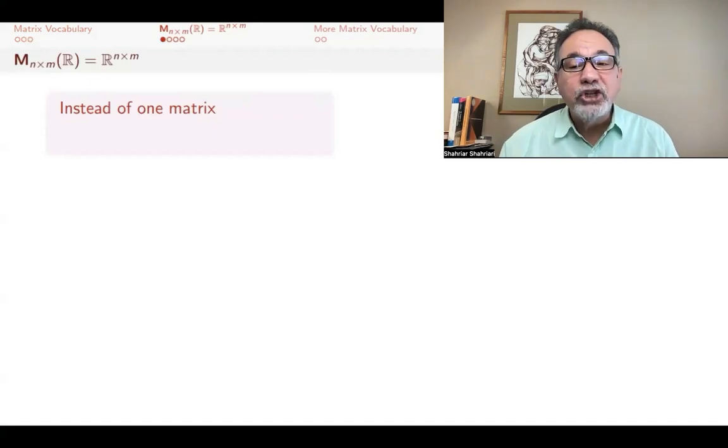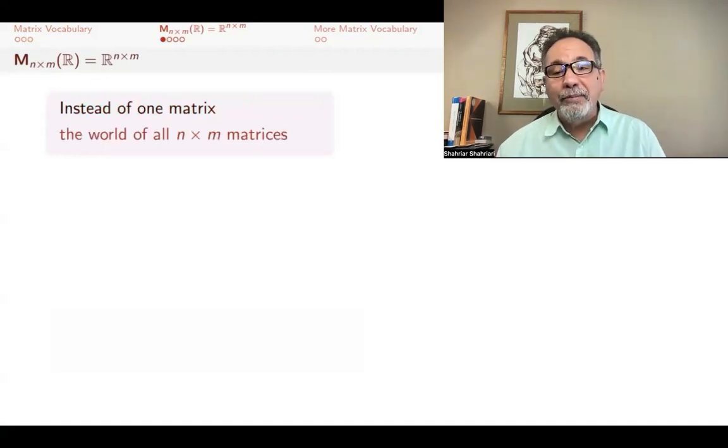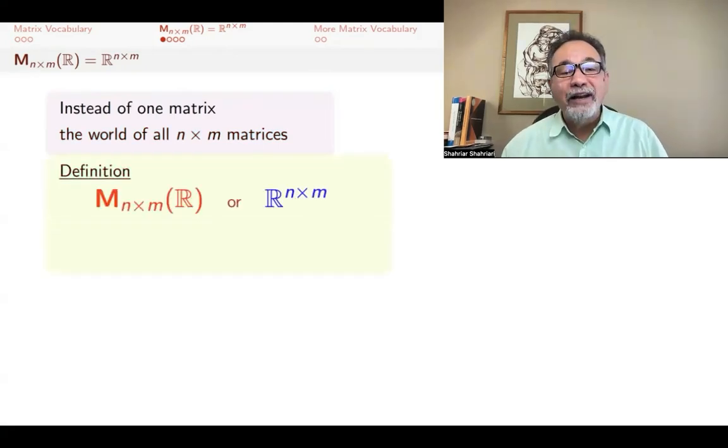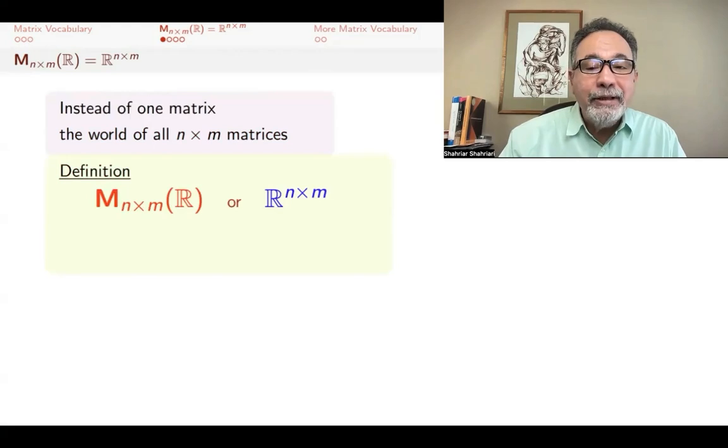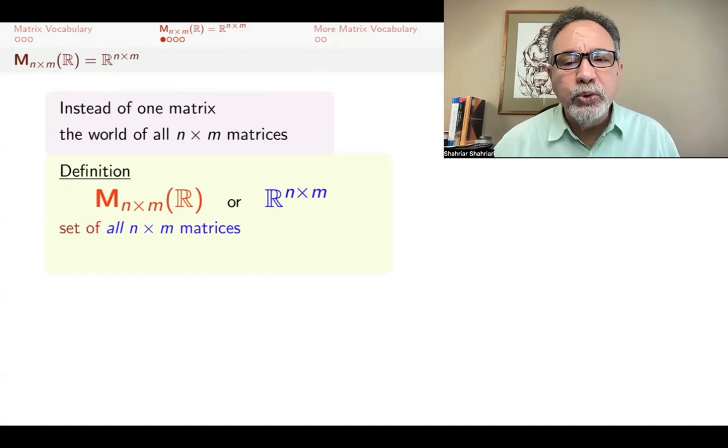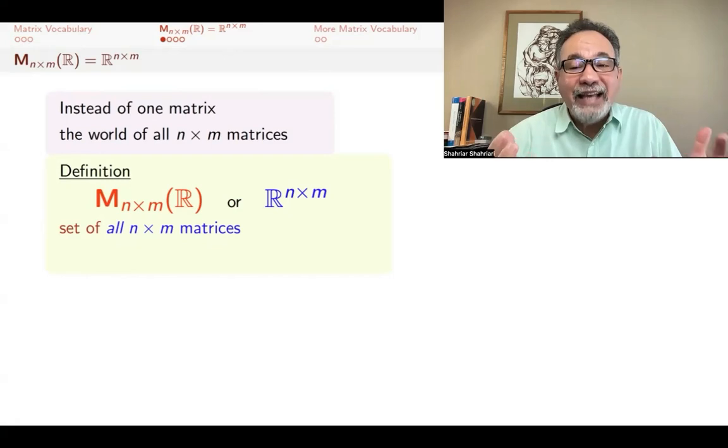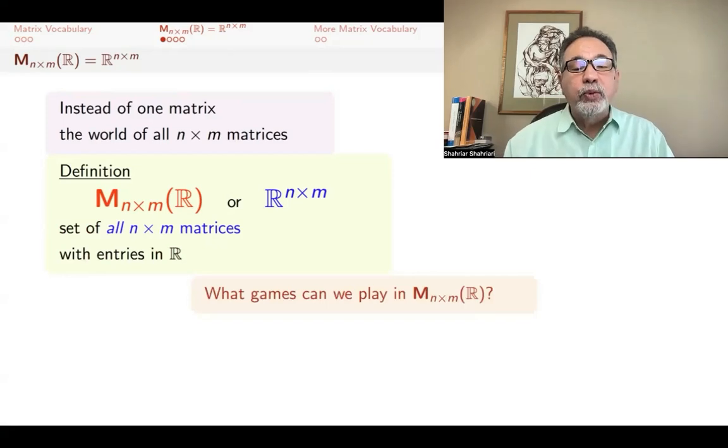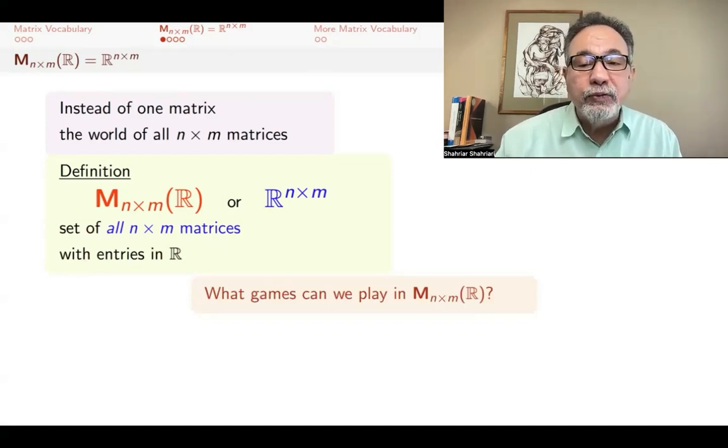We're interested in not just one matrix, but the whole world of n by m matrices. We fix n, and we fix m, and we look at all matrices that have n rows and m columns. We call that set of matrices either M sub n by m R, or R n times m. These are equivalent notations, the set of n by m matrices with entries in R. This is a set, and each of its elements is one matrix. The question that we want to ask is, if you live in this world, what games can you play with n by m matrices over R?